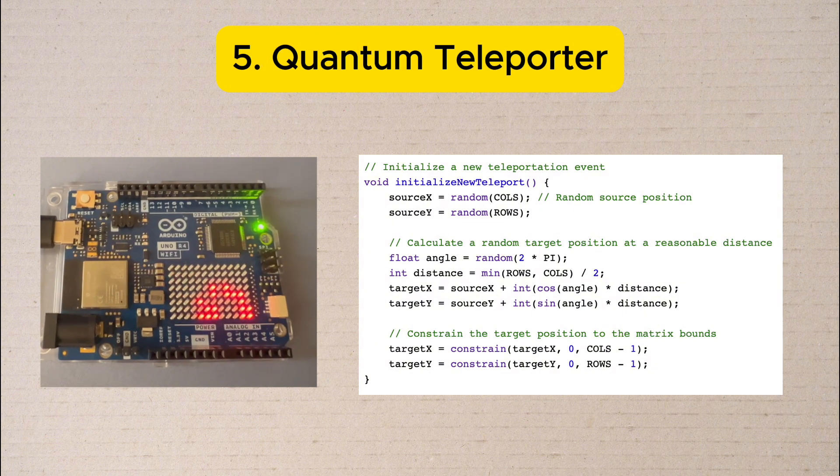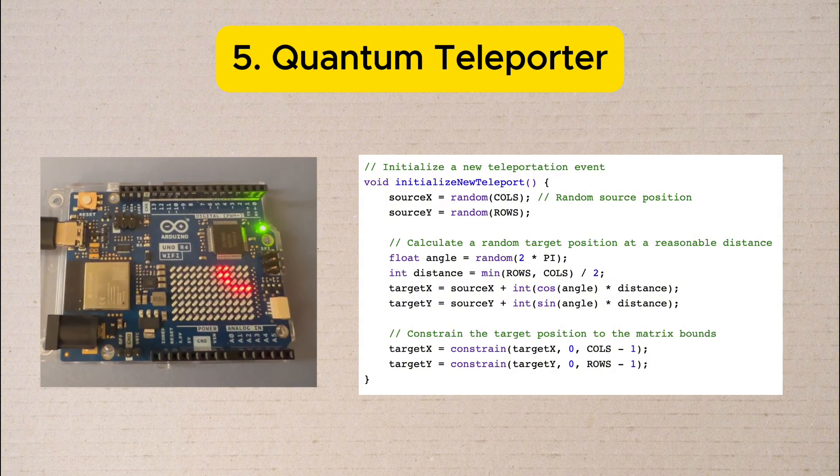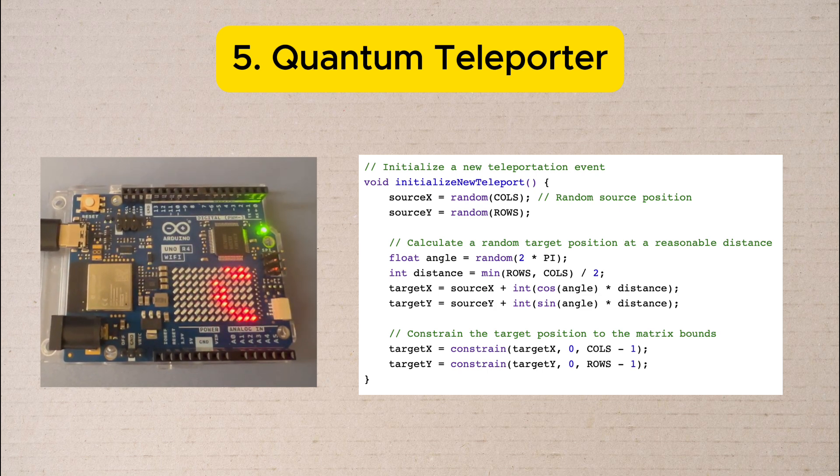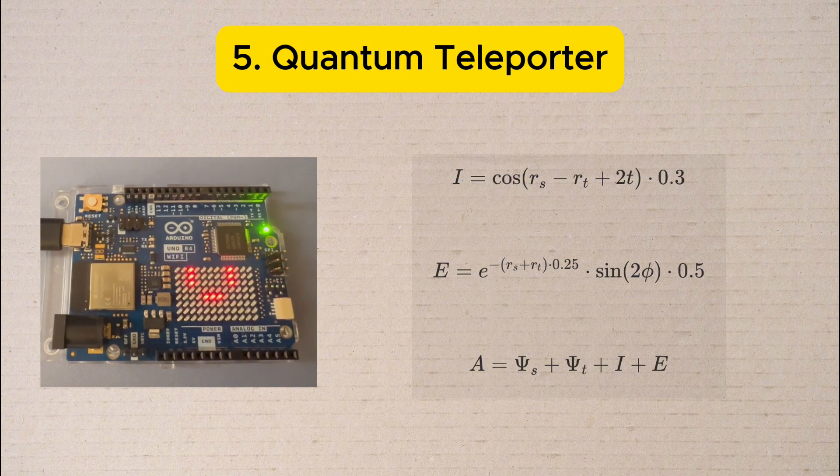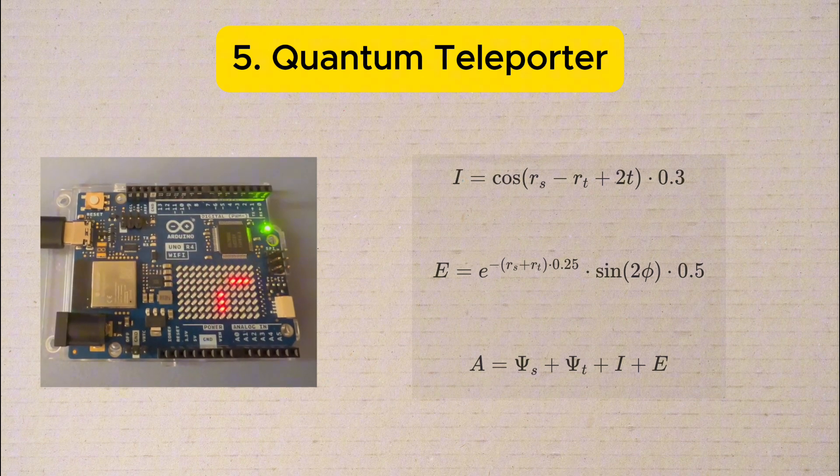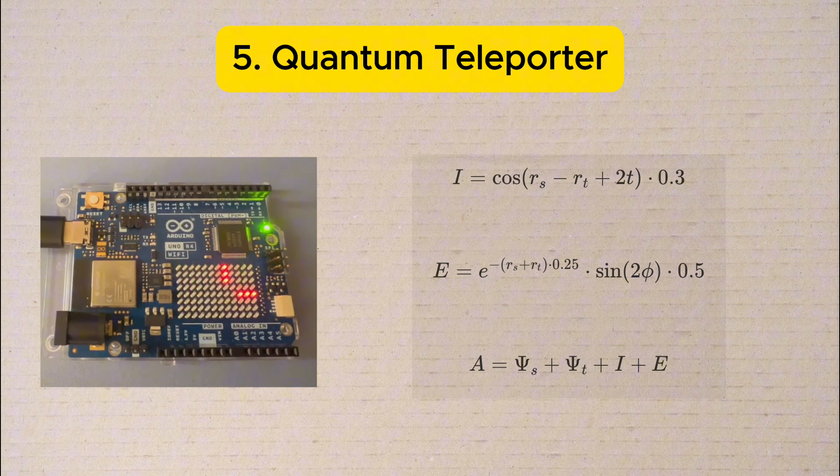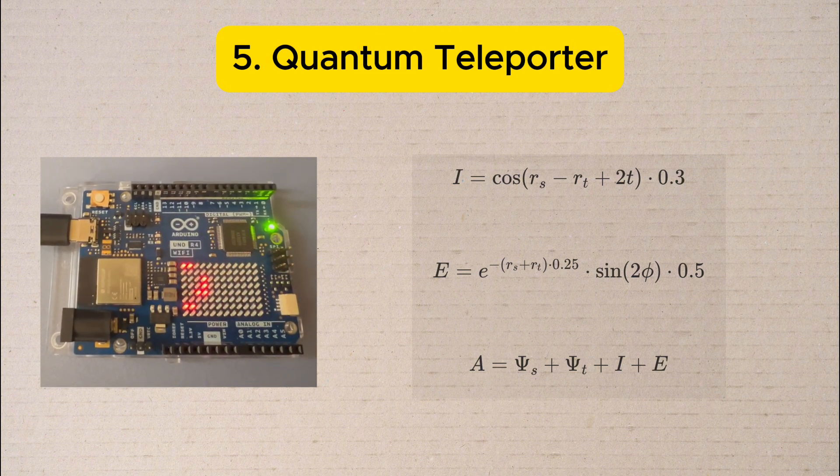The state gradually disappears from its original position while simultaneously appearing at the target location with interference patterns showing the quantum nature of the transfer. The code uses wave functions and probability distributions to create these interesting patterns by rendering the quantum entanglement effect on the LEDs, giving us a glimpse into the strange world of quantum mechanics.